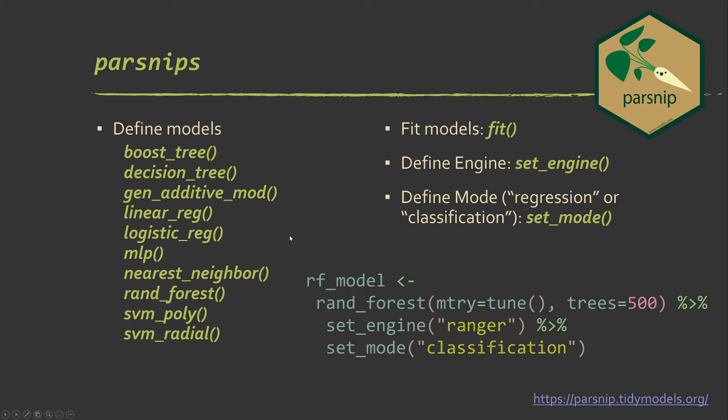The general process here is that you will use one of these functions to define a type of model. And then in here, I'm defining the parameters. So instead of tuning the trees, I'm just saying use 500 trees. This is for random forest. And this tune is a placeholder for saying that we're going to try to tune mtry later. The set engine is what implementation of random forest or the algorithm that you're using, or the method you're using, you're going to employ. So for random forest, there's a couple options, random forest and ranger. Here, I'm using ranger.